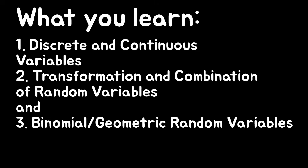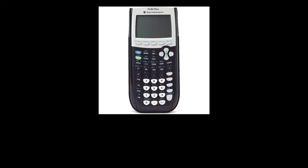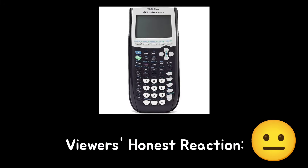Chapter five is a throwback to algebra two, where you learn the basics of probability — though this course covers it a tiny bit more in-depth. Chapter six is more mathy: discrete and continuous variables, transformation and combination of random variables, and binomial and geometric random variables. A point where you realize your calculator can do more than you originally thought.